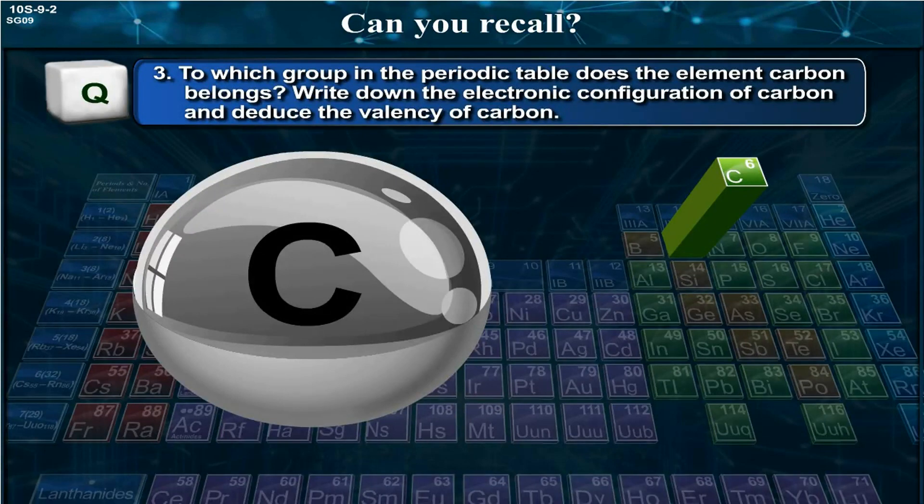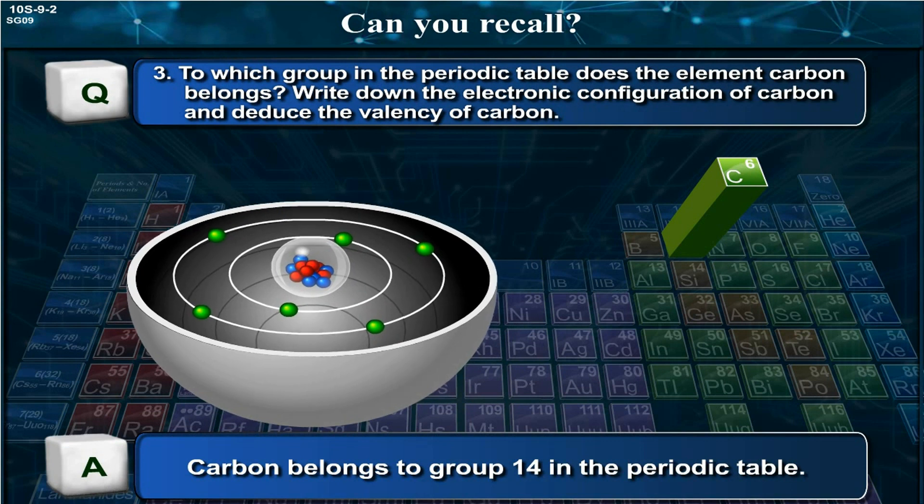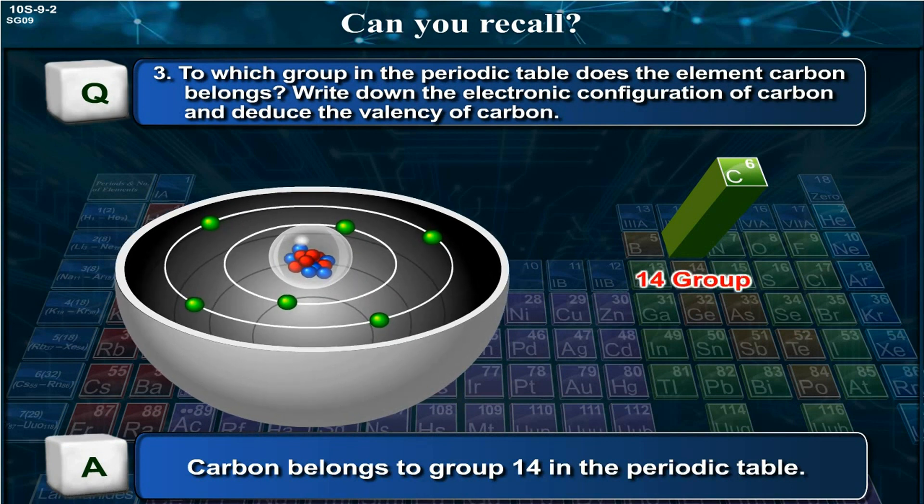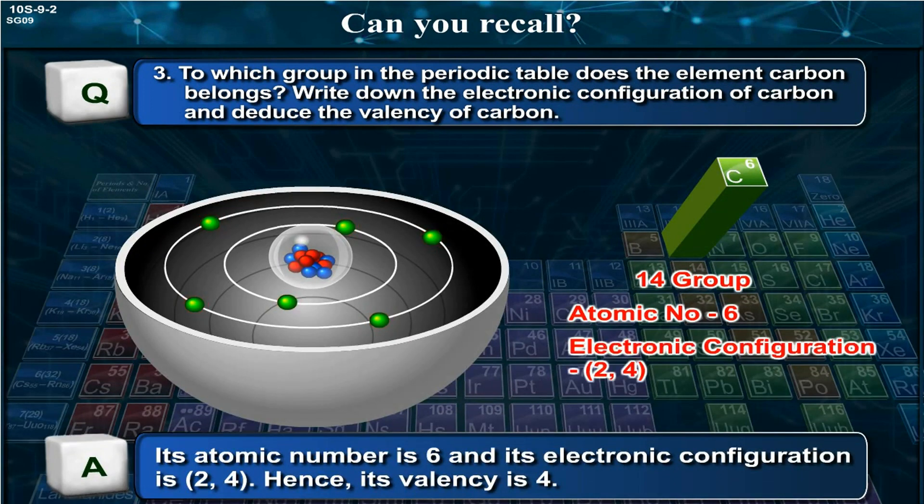To which group in the periodic table does the element carbon belong? Write down the electronic configuration of carbon and deduce the valency of carbon. Answer: Carbon belongs to group 14 in the periodic table. Its atomic number is 6 and its electronic configuration is 2, 4. Hence, its valency is 4.